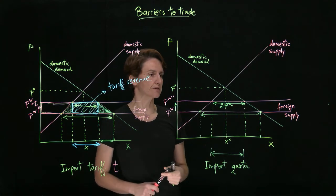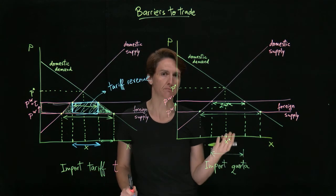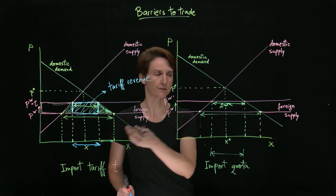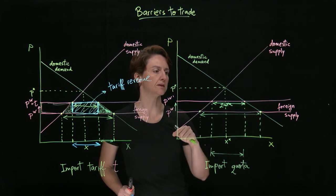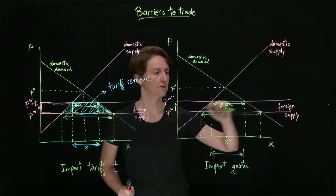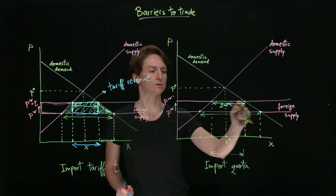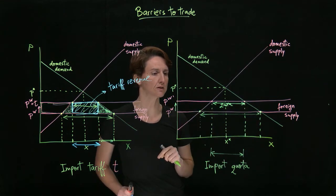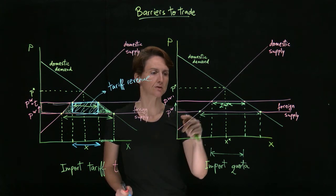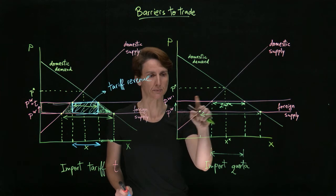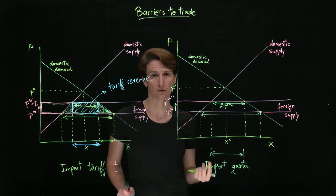What will be the consequence for domestic consumers and producers? It will be very similar to what happens when there's a tariff. So consumers domestically will have to pay higher price for the goods they purchase and they'll purchase a smaller amount so their surplus will be reduced. Domestic producers will be able to sell more and charge a higher price so they will benefit the same way that they do with import tariffs.